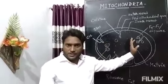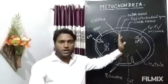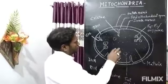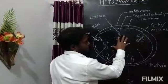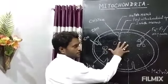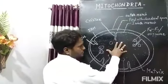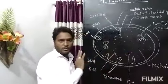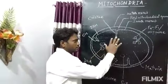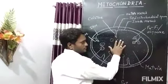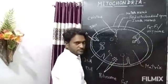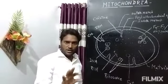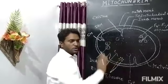We will discuss the electron transport chain and proton gradient in the next YouTube lecture. Now, inside mitochondria there is a semi-solid liquid known as matrix. A similar type of liquid is also found in chloroplast, but there it is known as stroma. That is the difference between stroma and matrix — matrix is found in mitochondria, while stroma is found in chloroplast.